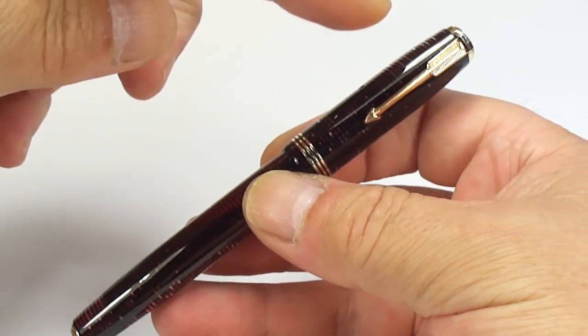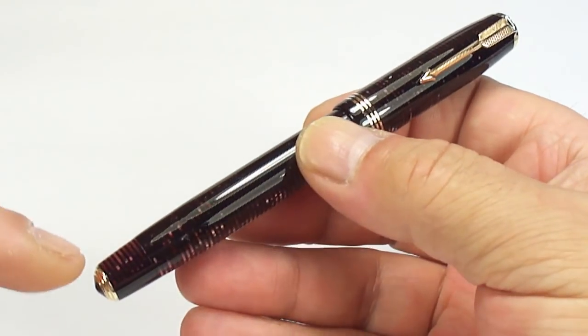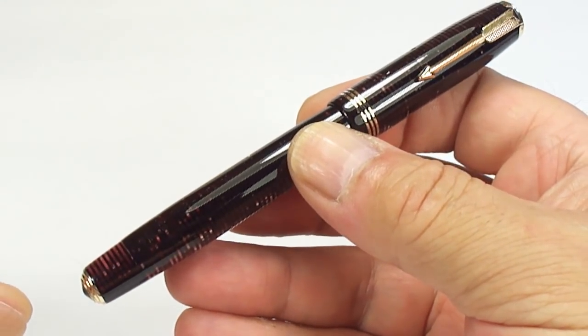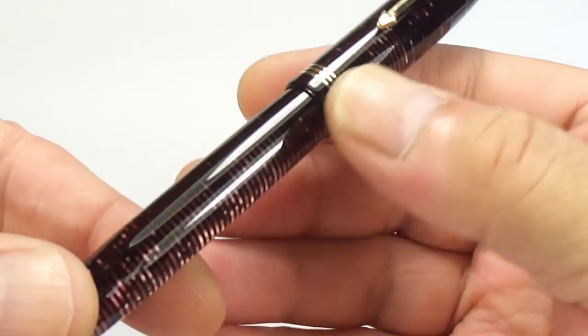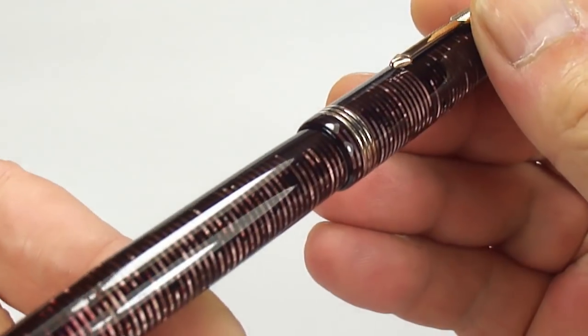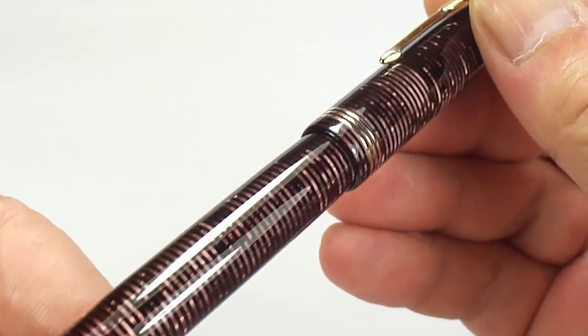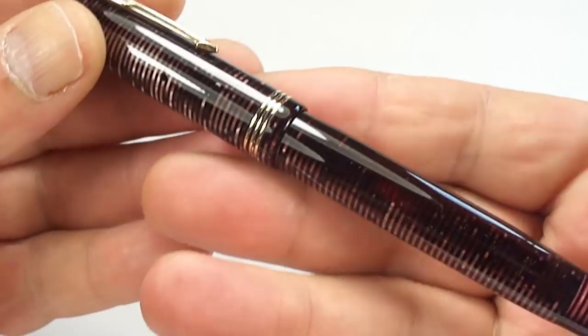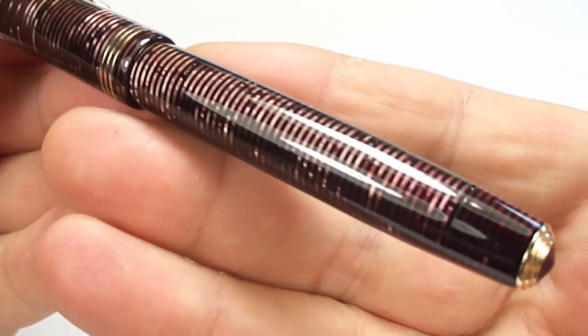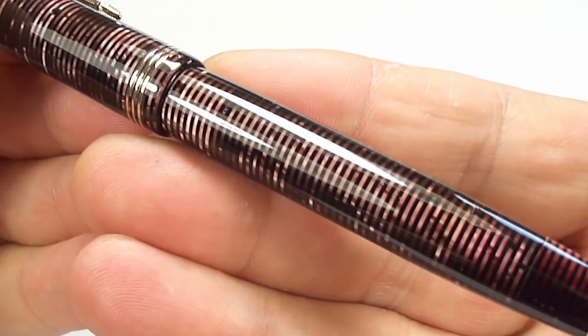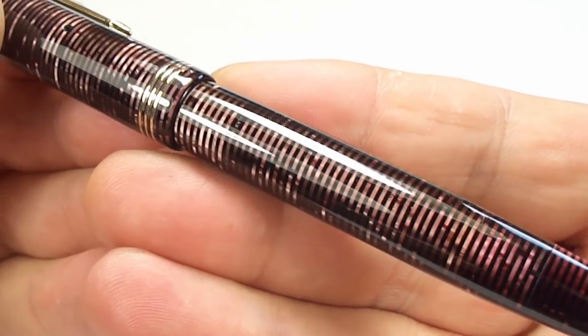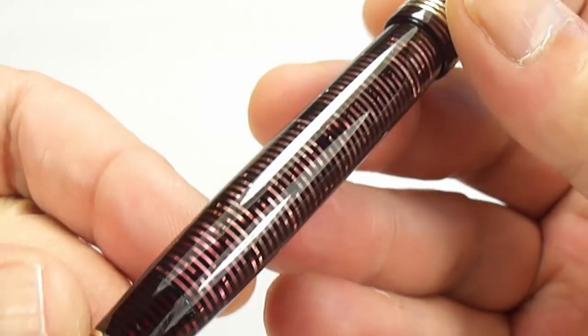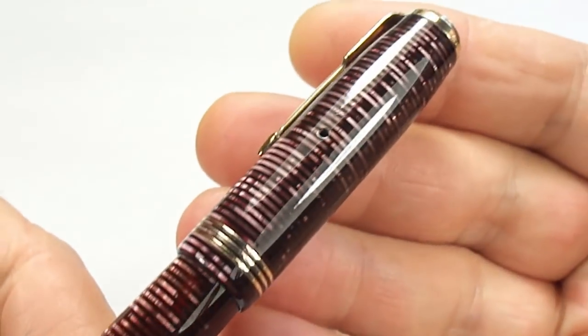First of all, the size of the pen, from the top of the cap to the bottom of the barrel. It's a lovely 130mm capped, around the barrel, the diameter, a nice chunky 12mm in diameter. Now this one, as you can see, comes in this beautiful burgundy rose pearl. Absolutely gorgeous.